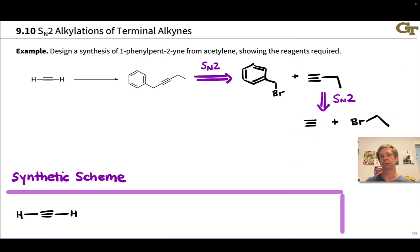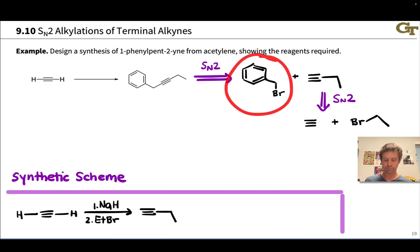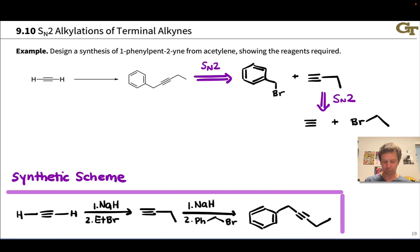In the forward direction, the key is using a base strong enough to deprotonate the terminal alkyne — something like NaNH2 or sodium hydride. In the first step, we use sodium hydride to deprotonate acetylene, generate an acetylide anion, then treat with ethyl bromide to establish the first carbon-carbon bond via SN2. Then we rinse and repeat with our second electrophile: sodium hydride followed by benzyl bromide. This establishes the other new carbon-carbon bond in the target.